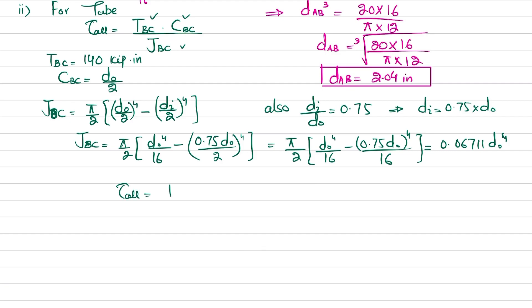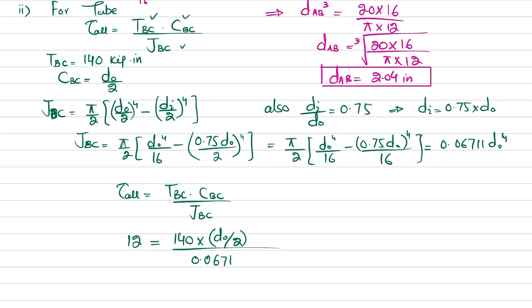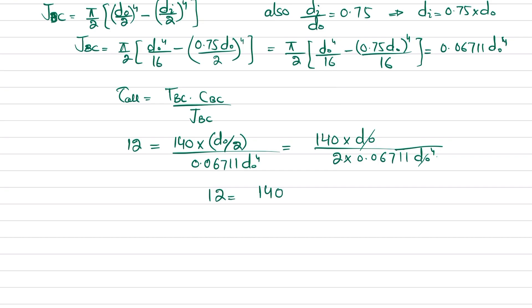Now substituting into the shear stress formula: τ_allowable = T_BC · c_BC / J_BC. So 12 = 140 · (d_outer/2) / (0.06711 · d_outer⁴). The d_outer in the numerator cancels with one factor in the denominator, leaving d_outer cubed. So 12 = 140 / (2 × 0.06711 × d_outer³).